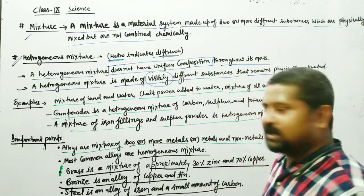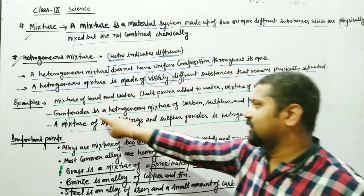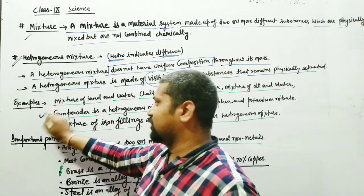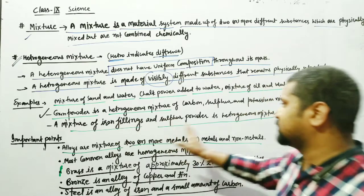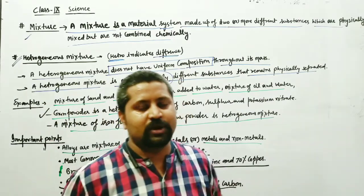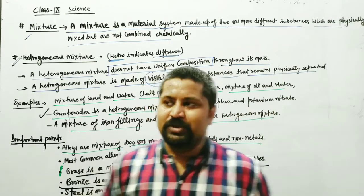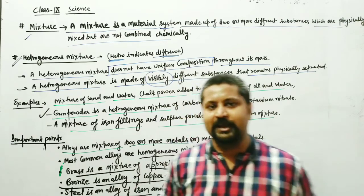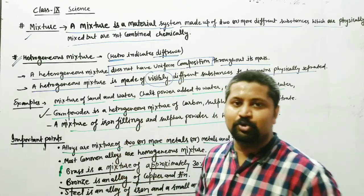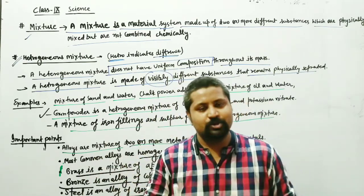Other examples of heterogeneous mixtures include chalk powder added to water, and gunpowder which is a mixture of carbon, potassium, and nitrogen compounds. Students should note: what is a mixture, what are its characteristics, and understand the difference between heterogeneous and homogeneous mixtures.